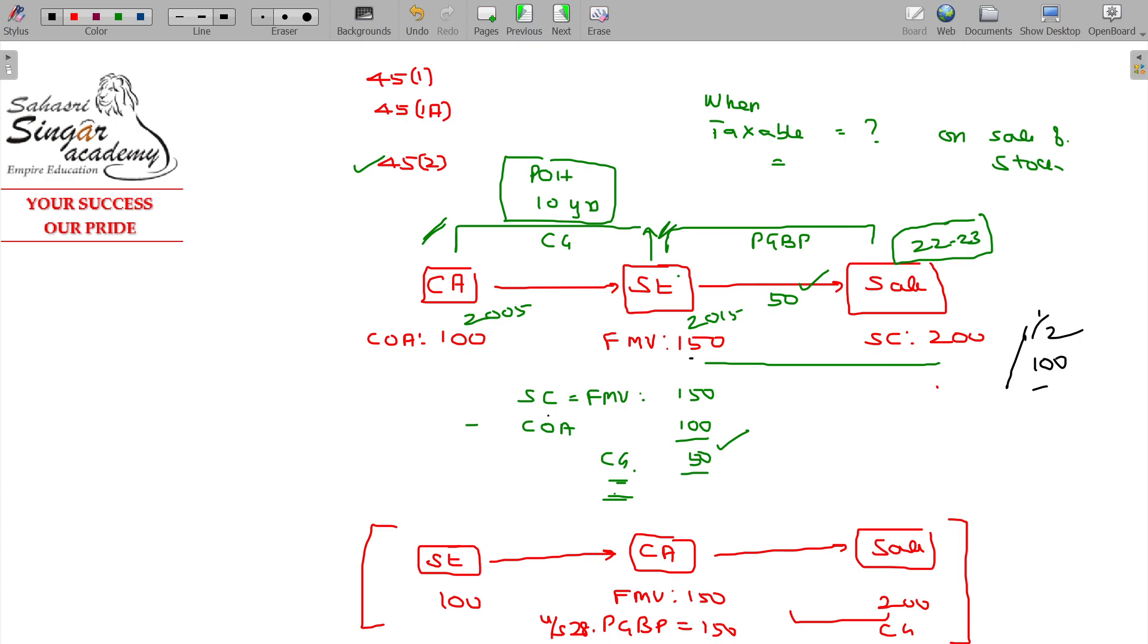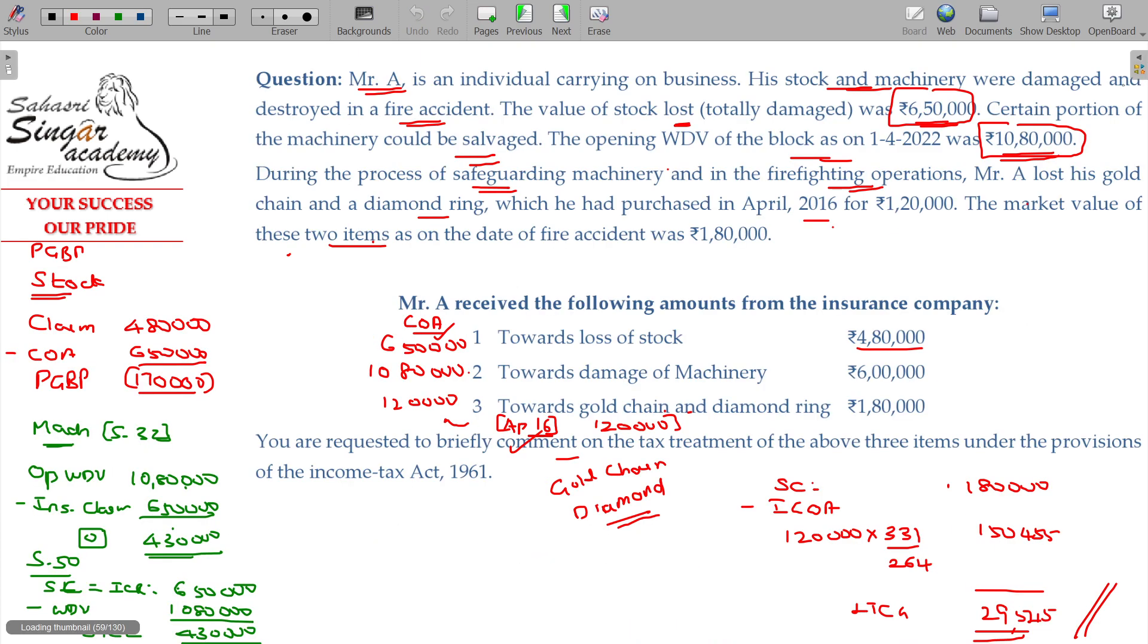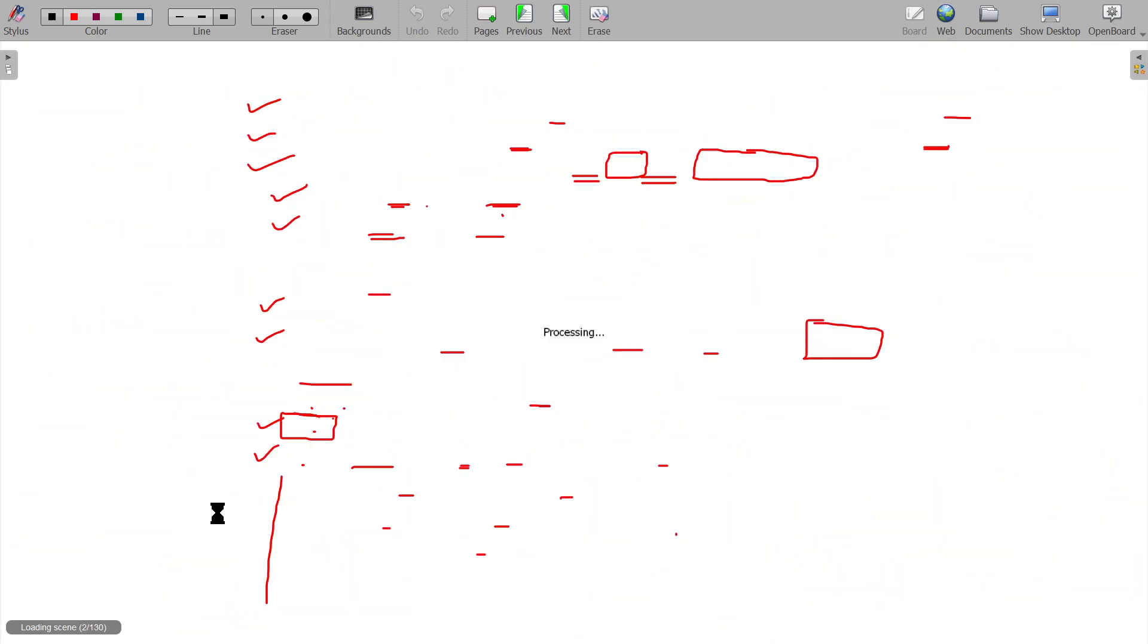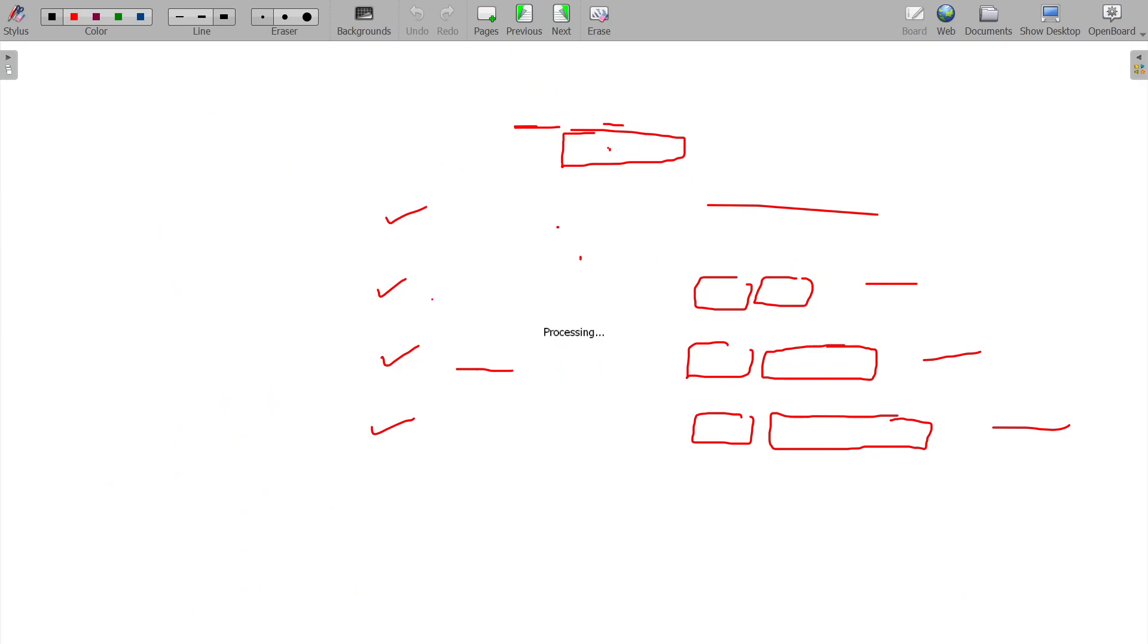This is the example. One person has one agricultural land which is a capital asset. If you want to sell, the plot will be stock-in-trade for the real estate business. Land into stock means the plot, then automatically it comes under conversion. Already we have studied in Section 2 Class 47. Conversion of stock-in-trade into capital asset is also transfer. Let us go for a recap of that section, Section 2 Class 47. That is the reason for the real estate business.